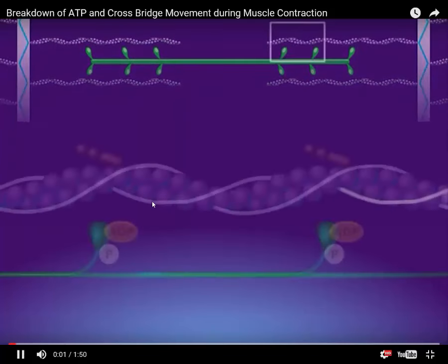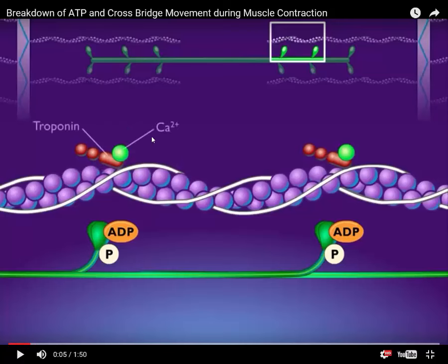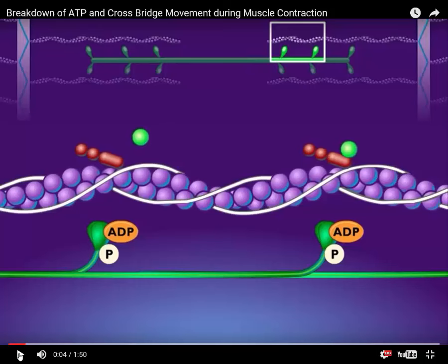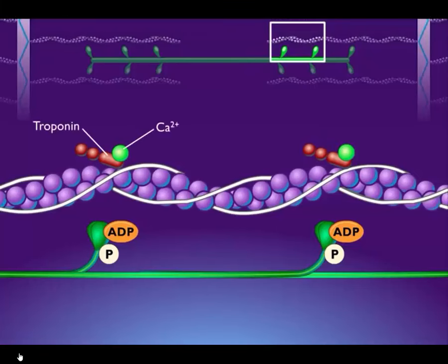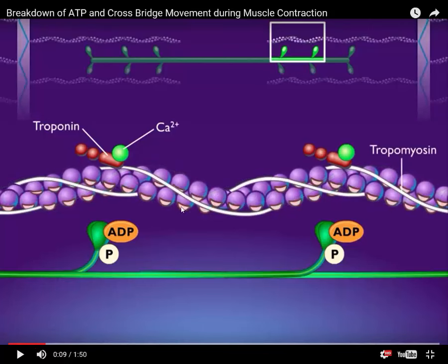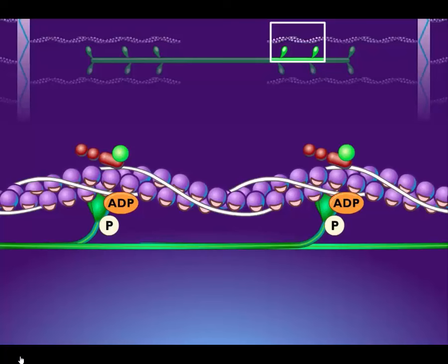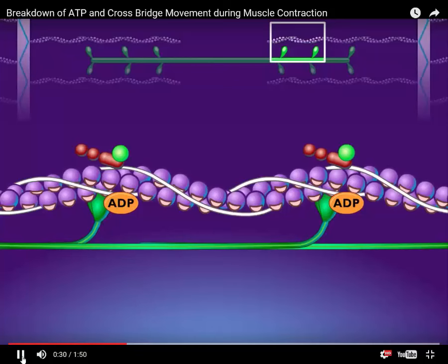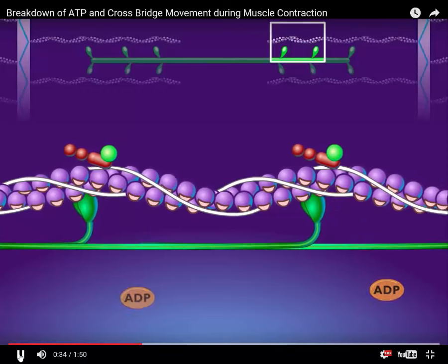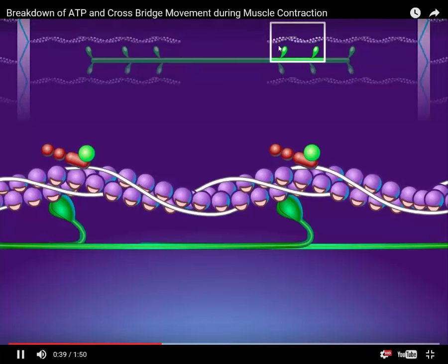Let's zero in on muscle contraction. Calcium ions bind to troponin — that calcium came from the sarcoplasmic reticulum of the muscle cell. It bonds to troponin, which moves tropomyosin out of the way and uncovers the binding sites for myosin. The myosin heads attach to the exposed binding sites on the actin myofilaments to form cross bridges. The phosphate is released, and energy stored in the myosin head is used to move it, causing the actin myofilament to slide past the myosin myofilament. The ADP is released as the head moves.